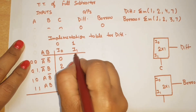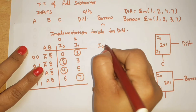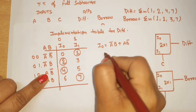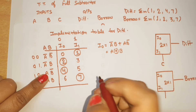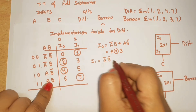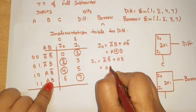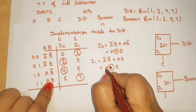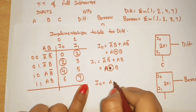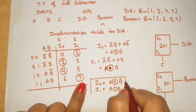From the implementation table for difference: I0 is equal to A-bar B plus A B-bar, which can be written as A XOR B. For I1: the expression covers A-bar B-bar and A B, which is the expression for A XNOR B. So the equations are: I0 equals A XOR B, and I1 equals A XNOR B. This is the equation for difference.